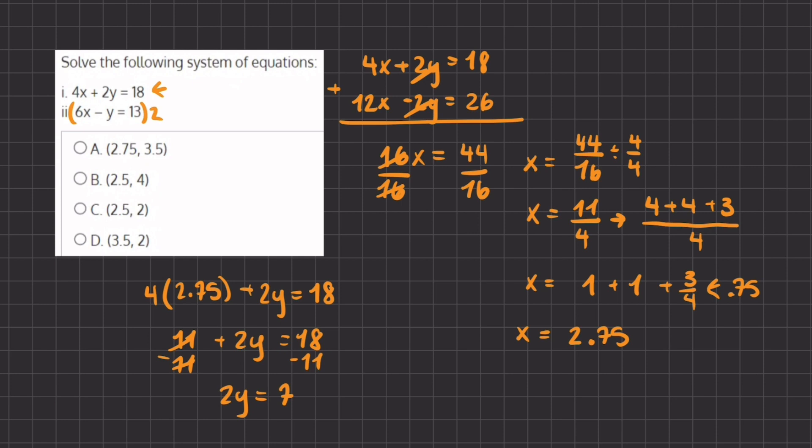To isolate y and find its value, we will divide both sides by 2, and we are left with y equals 7 divided by 2. In decimal form, that is 3.5.